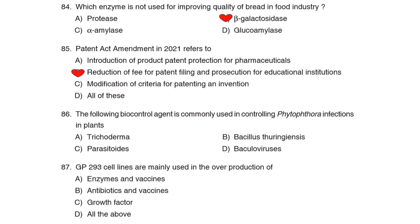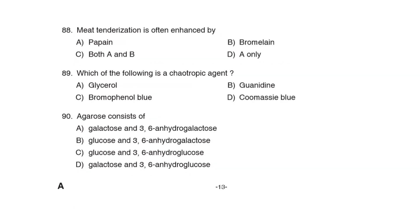86th Question: The following biocontrol agent is commonly used in controlling Phytophthora infection in plants. Correct Answer: Trichoderma. 87th/88th Question: GP293 cell lines are mainly used in the overproduction of Option C: Growth Factor.